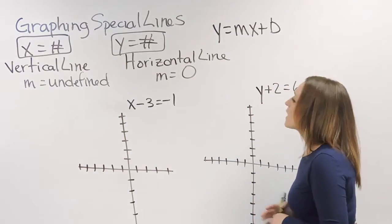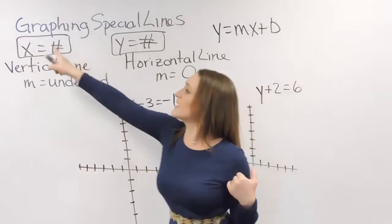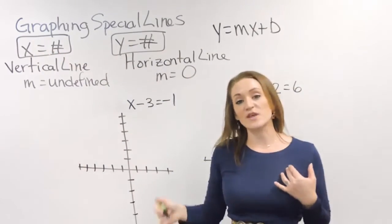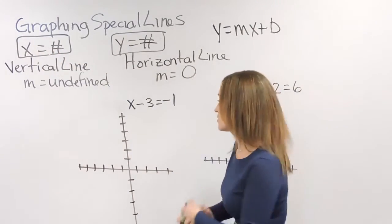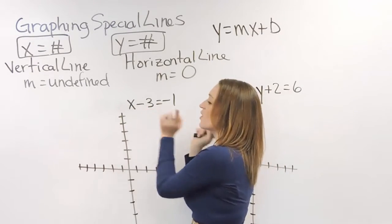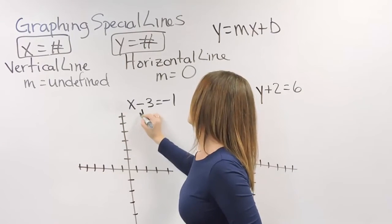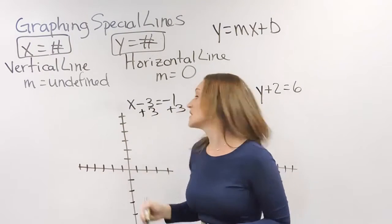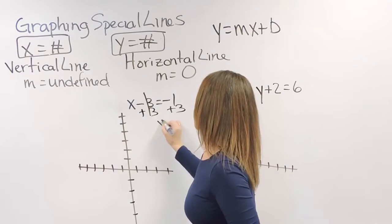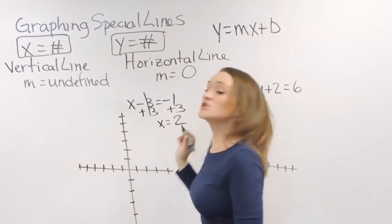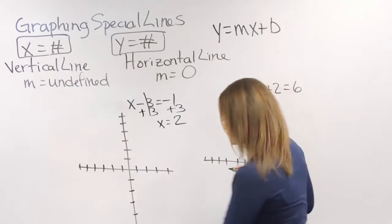So this is how you graph them. First off, you want to make sure that they're in proper form, that they're solved for the variable. So if you have one like this here, the first thing we want to do is get x all by itself. So let's move that 3 over and add it to both sides. So if I add 3 to both sides, I'm left with x is equal to 2.